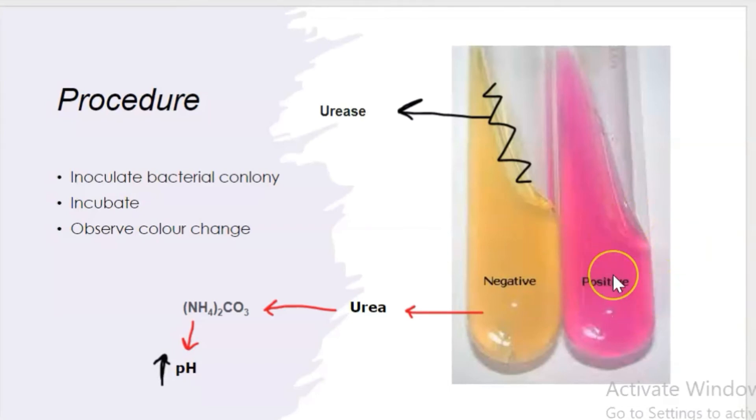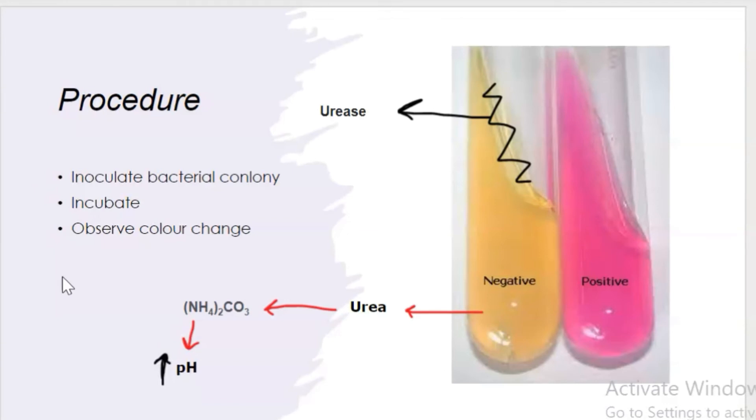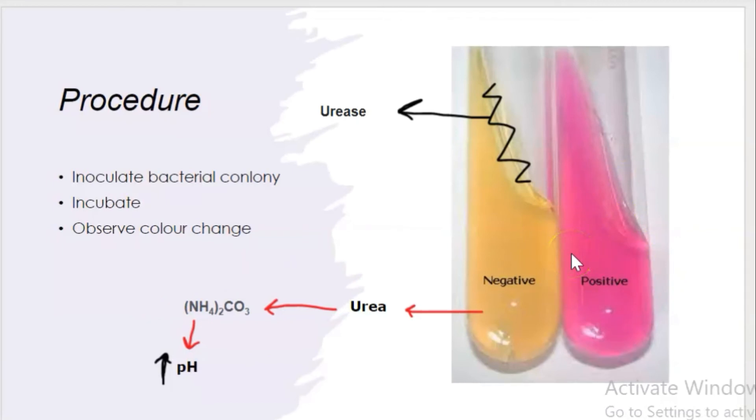The pink color is remembered by the name of the indicator, which is phenol red. Red color is similar to bright pink. If you remember the name of the pH indicator, phenol red, it's easy for you to remember the positive result: bright pink, not just pink but bright pink, similar to red color.